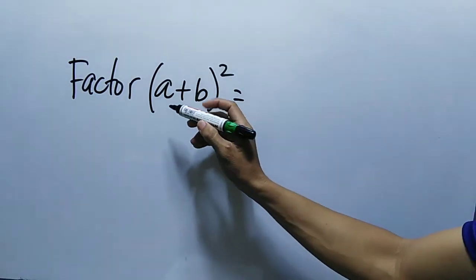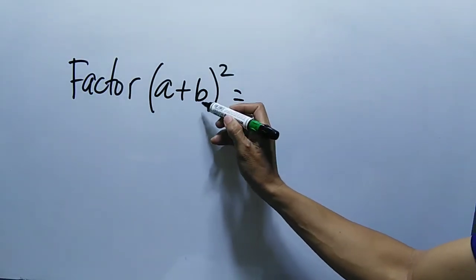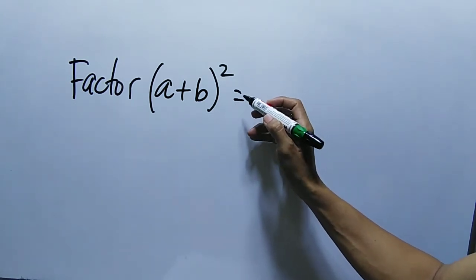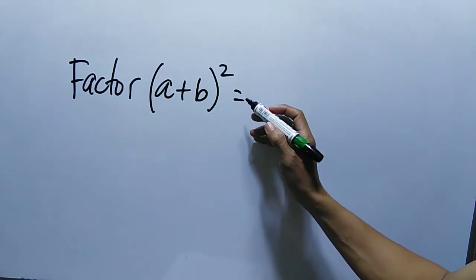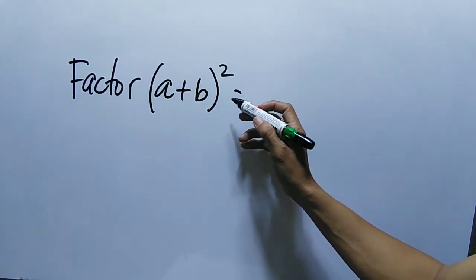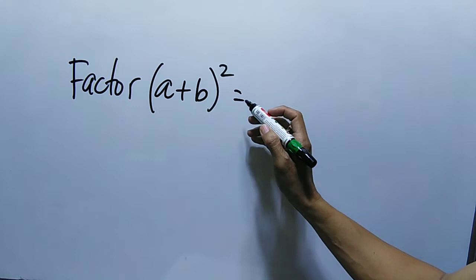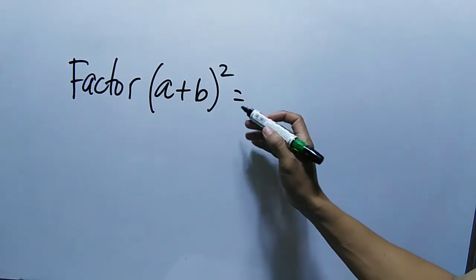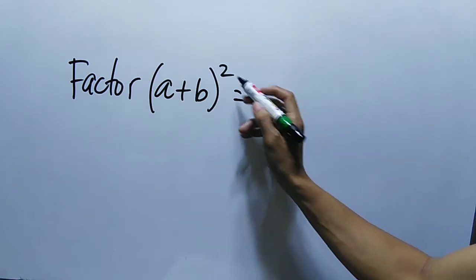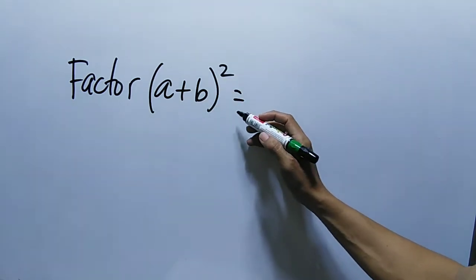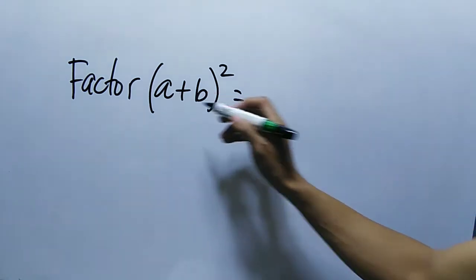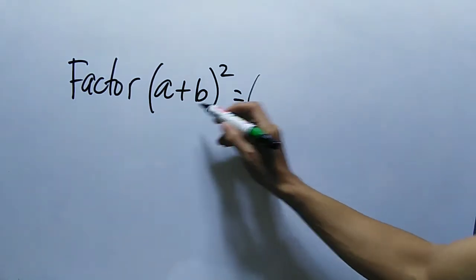We will factor the quantity of (a + b) squared. We will use factoring by a perfect square trinomial. Squaring a binomial generates a perfect square trinomial, or a perfect square trinomial is a result of squaring a binomial. First, we have to square the first term of the binomial.